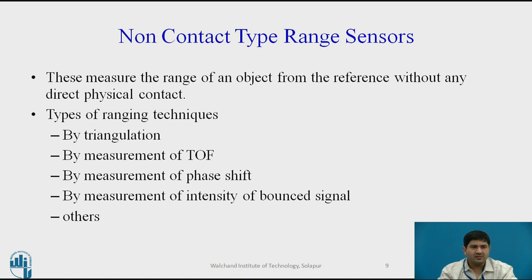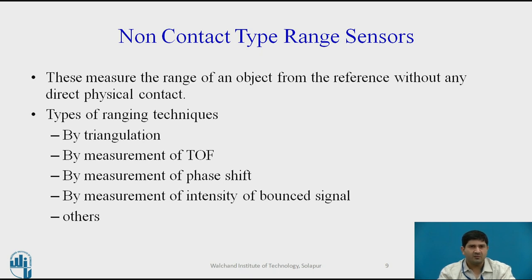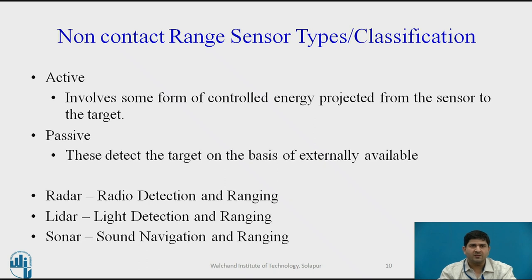Most range sensors are non-contact type and there are different measuring techniques used to estimate this range without direct physical contact. Ranging techniques include: (1) triangulation, (2) measurement of time of flight, (3) measurement of phase shift, and (4) measurement of the intensity of the signal that bounces off the target. There are also visual techniques such as stereo triangulation and binocular vision, which are more complex and typically studied as part of vision systems. Non-contact range sensors can be classified as active or passive.